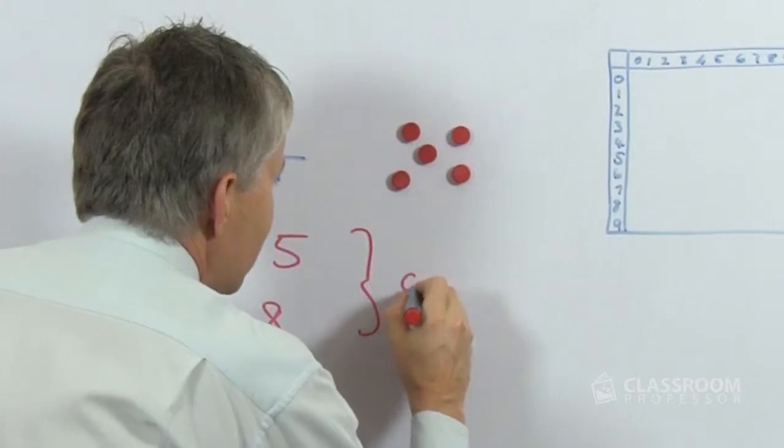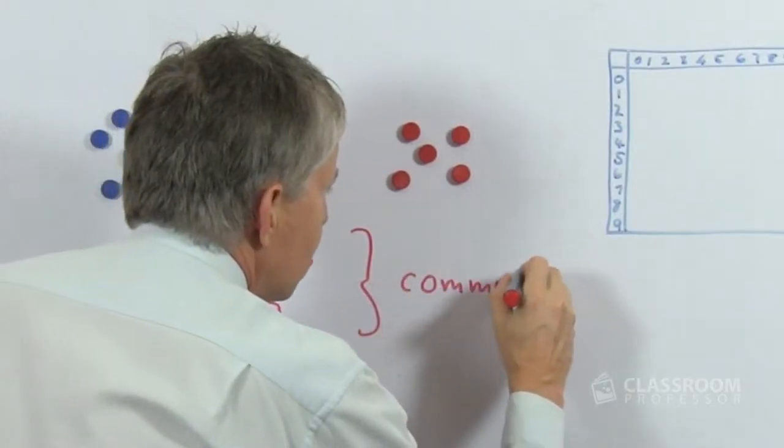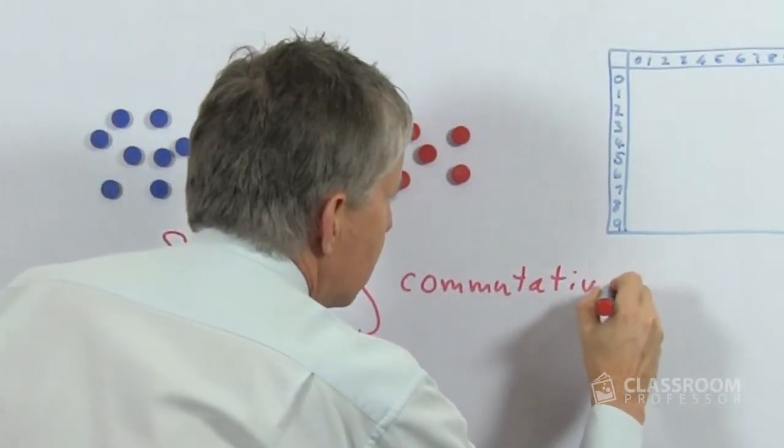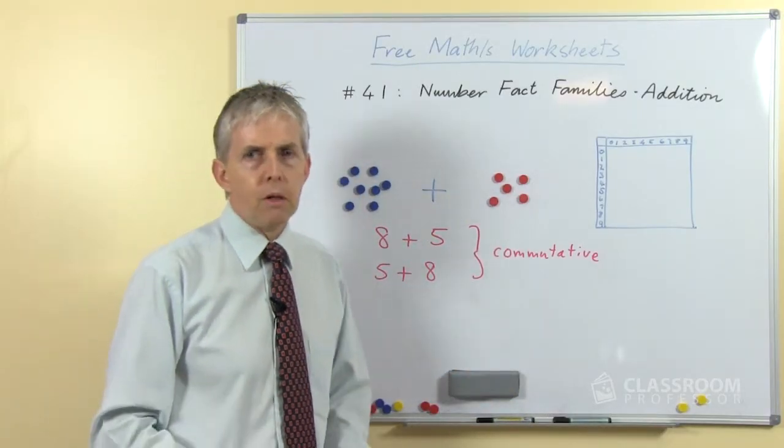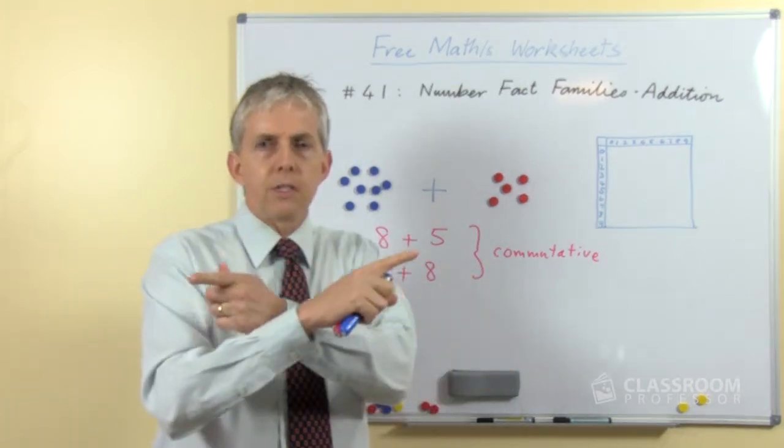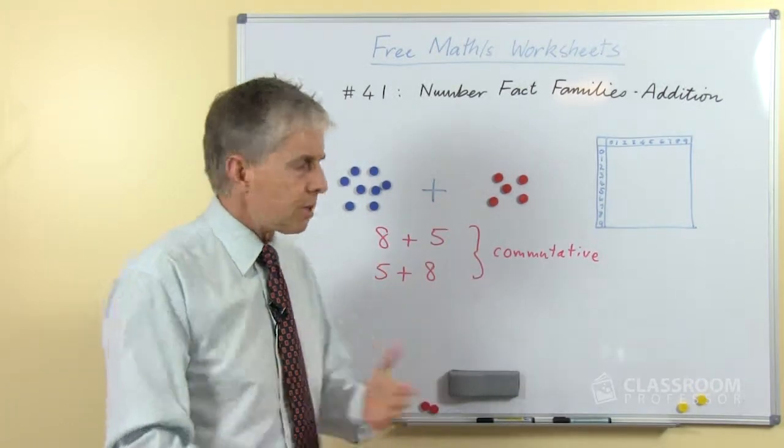The other fancy word that we sometimes use, although not with students, is that this is an example of the commutative principle. It's the fact that you can turn the facts around and do them in opposite directions.